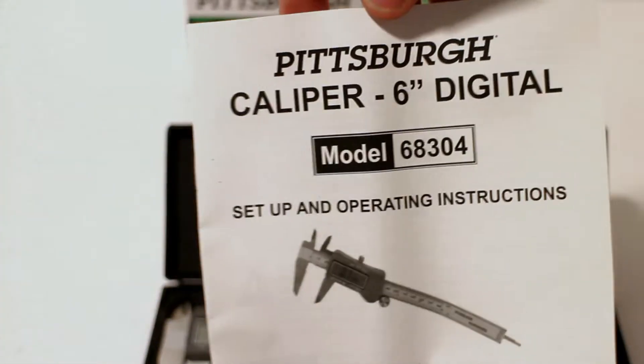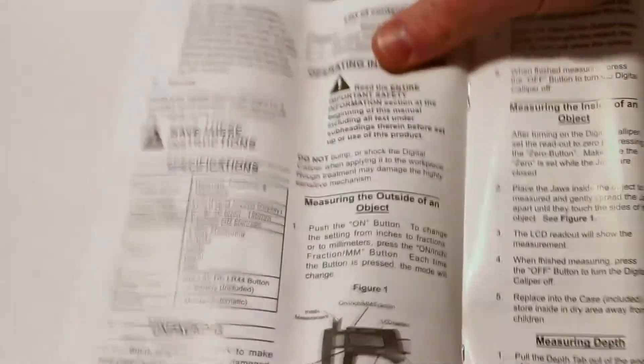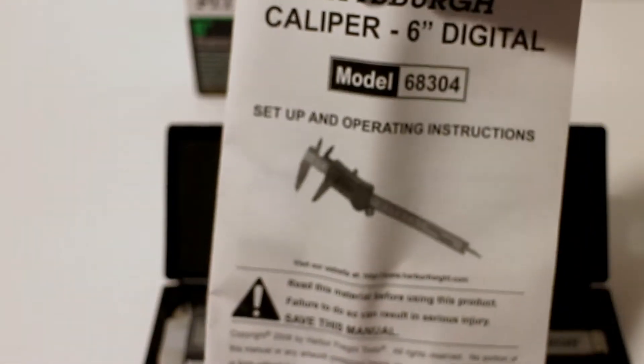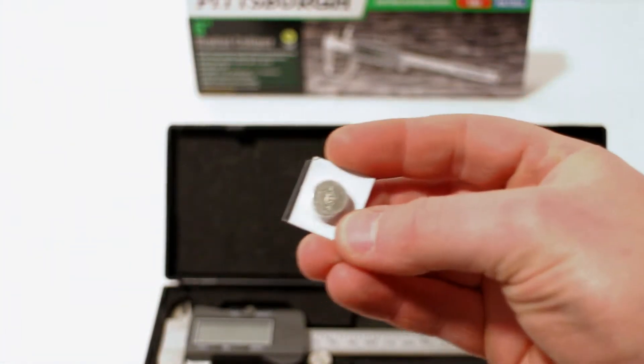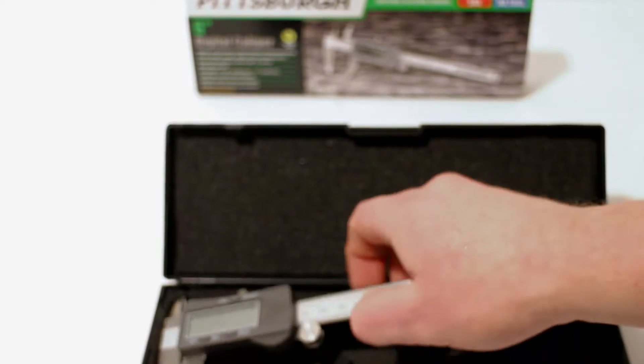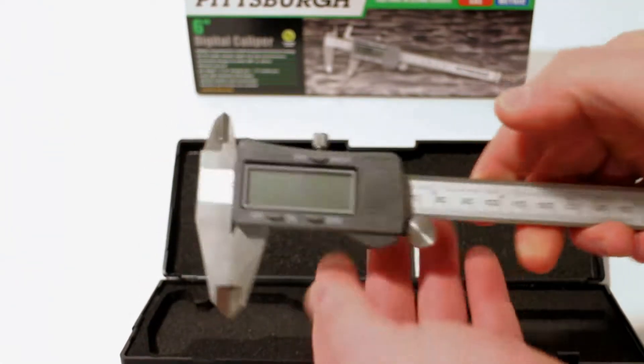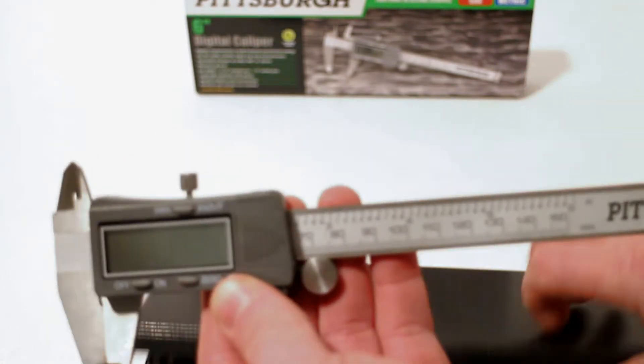It comes with an owner's manual for the Pittsburgh caliper. It also comes with a second battery, which is a nice thing. Let's go ahead and measure some things with this digital caliper.